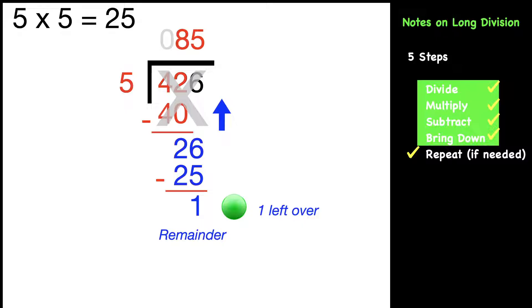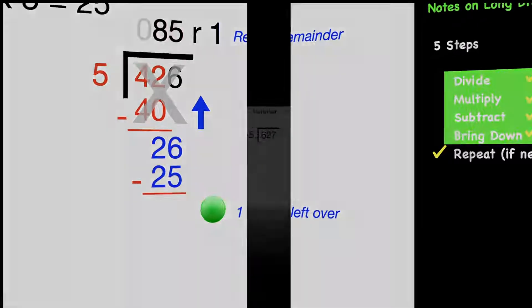So because we have no other numbers to bring down, that's going to go at the top. And when you write your final answer, you would write it as 85 R 1, or in other words, 85 with a remainder of one. And that's our answer for that.